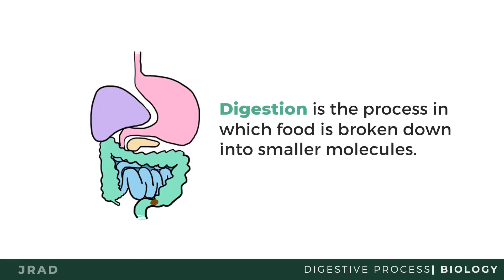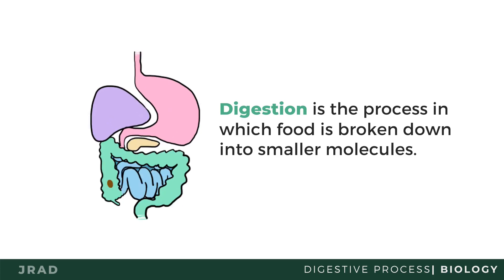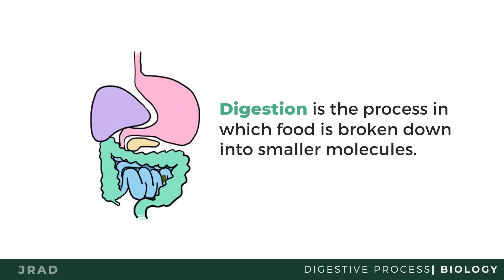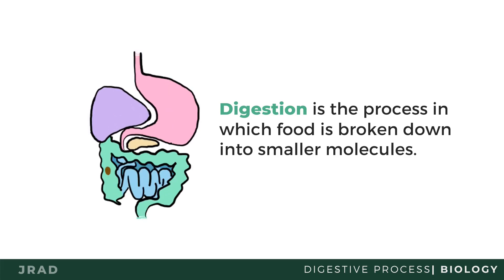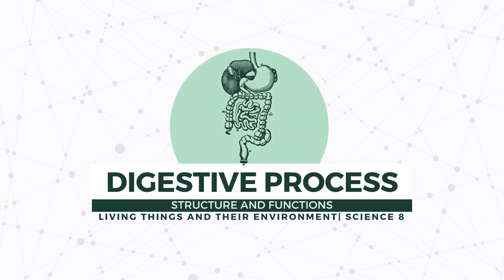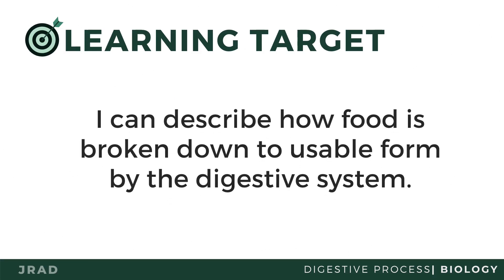In the past lesson, we defined digestion as the process in which food is broken down into smaller molecules. The journey of food starts from the mouth and ends in the anus. With the help of accessory organs, the food is broken down into their simplest form. In this video, we will discuss the digestive process and the different enzymes. Here's our learning target: I can describe how food is broken down into a usable form by the digestive system.